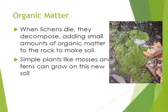The stages of primary succession include pioneer microorganisms, plants, grassy stage, small shrubs, and trees. These are all initiated by lichens — when lichens die they decompose, adding small amounts of organic matter to the rocks to make soil. This soil containing organic matter is then used as nutrients by new types of plants; mosses and ferns can grow on this new soil.